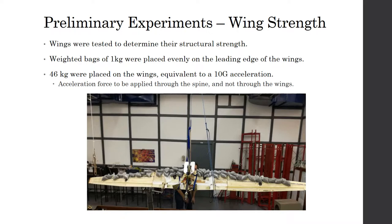The wings had to be tested to determine their structural strength with regard to how much acceleration they could handle. The wings are supported perpendicularly to the ground and weighted bags of 1 kilogram each were placed evenly along the leading edge of the wings. This would simulate the force due to acceleration experienced by the wings.